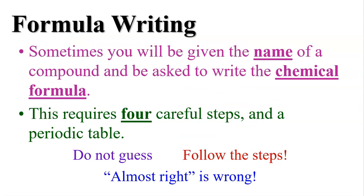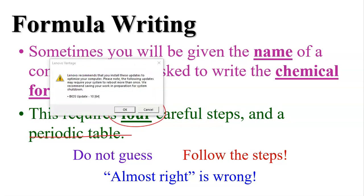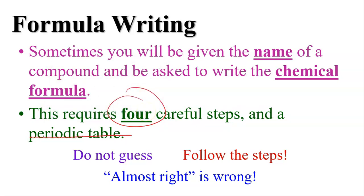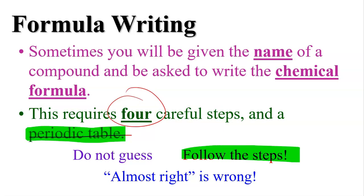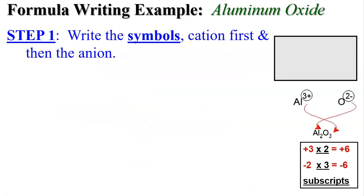Sometimes you will be given the name of a compound and be asked to write your chemical formula. This requires four careful steps and a periodic table — you always want your periodic table. Do not guess; follow your steps. Almost right is wrong — if you make the wrong compound, you will not have the right solution, and sometimes that's really bad. We're going to practice with aluminum oxide.